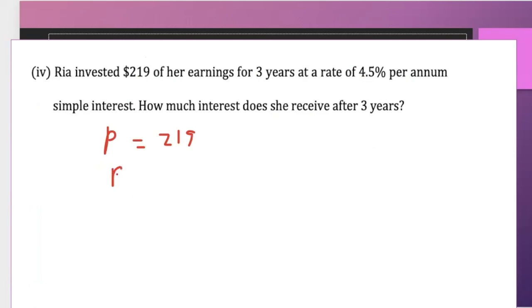The rate is 4.5 divided by 100. So in other words, the rate is 0.045.